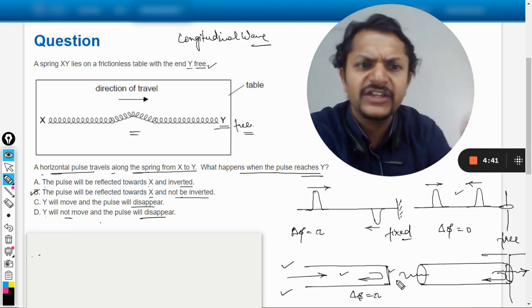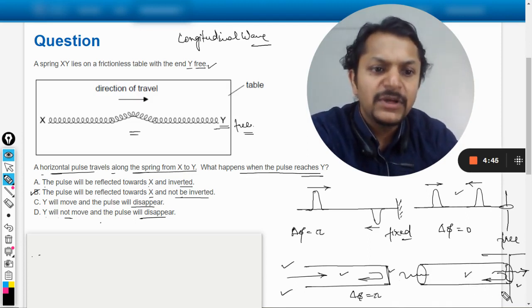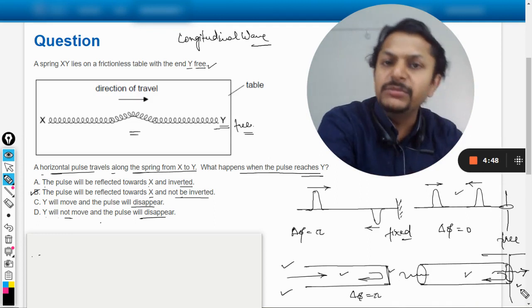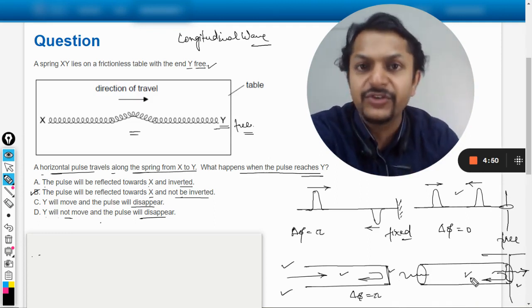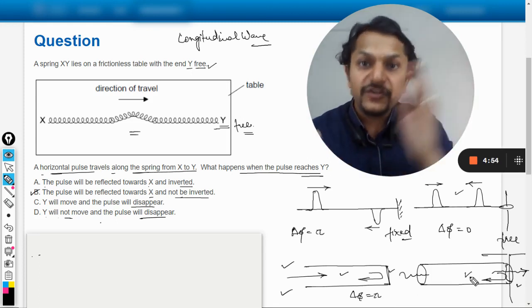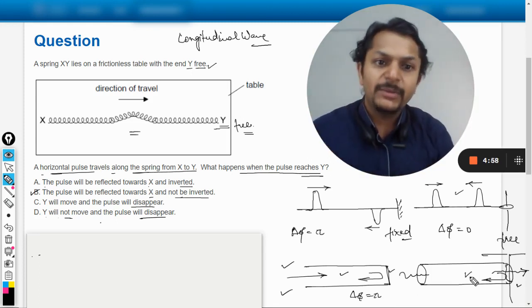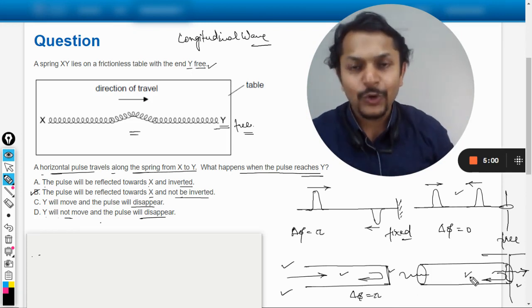And hence the phase change of π has taken place. But here this medium and this medium, like the other medium, will be treated as rarer and this will be treated as denser. So when you're moving from denser to rarer, the reflection takes place but the phase change does not take place. So I believe the answer is B. All the best, bye.